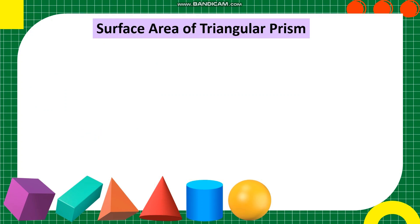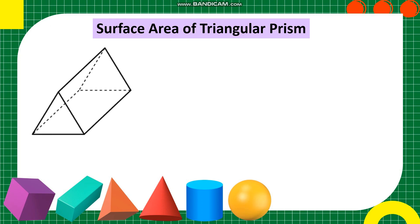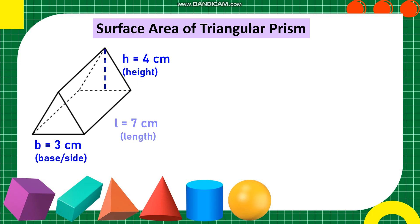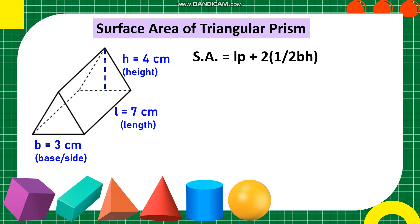Surface area of triangular prism. We have here the figure of a triangular prism whose height measures 4 centimeters, base equals 3 centimeters, and length equals 7 centimeters. To solve for the surface area, we use the formula: Surface area equals length times perimeter of the triangle, plus base times height.